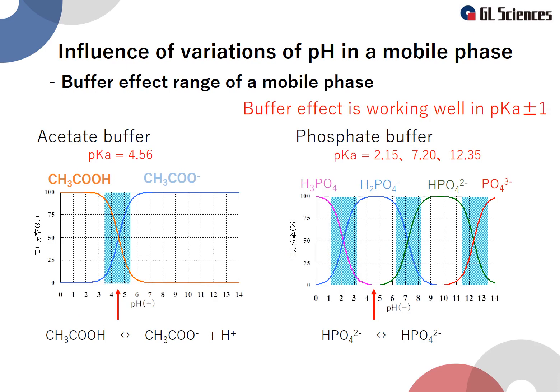With respect to the buffer, a buffer works well when the pH value of the mobile phase is close to the pKa value of the chosen buffer. The pH of the mobile phase should fall between the pKa value minus 1 and the pKa value plus 1. Please note the difference between the pKa of the analyte and the buffer.